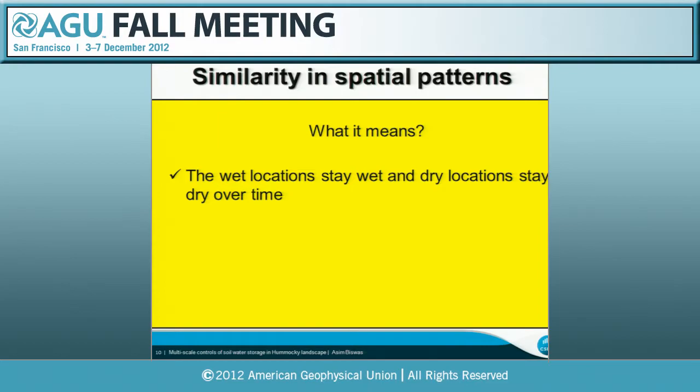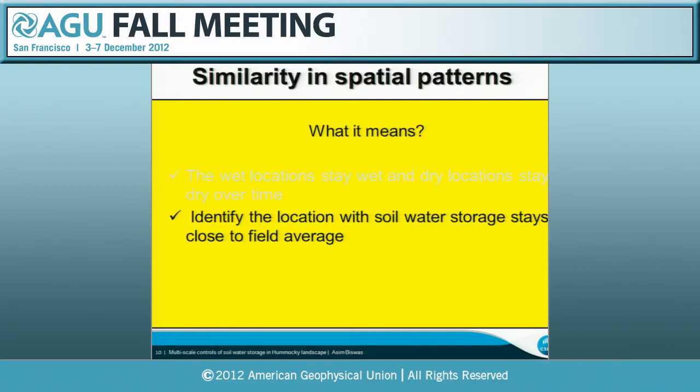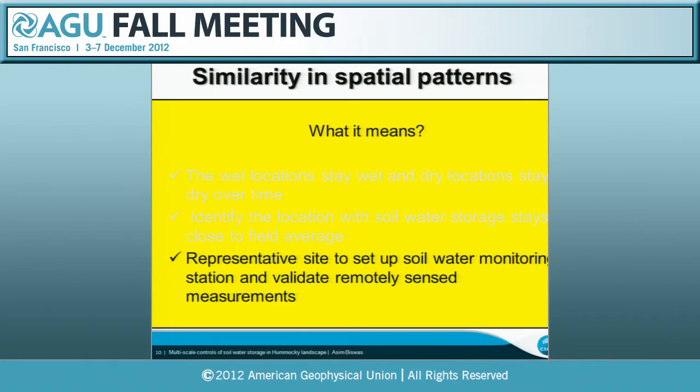What does this mean? When I found the spatial patterns are very similar — I go to the field, a wet location stays wet over the years, and a dry location stays dry, whether it's summer, spring, or fall. So I tried to identify a location representing around 50% of the field average soil water storage, which could be used for further monitoring, setting up a monitoring station, or even validating remote sensing measurements.